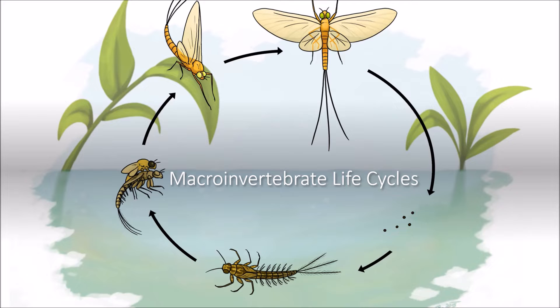One aquatic insect that's pictured on the screen you may be familiar with — this is the mayfly. The larva will spend anywhere from months, most likely years, in aquatic ecosystems, but are only adults on dry land for 24 to 72 hours. This leaves them just enough time to mate and lay eggs for future generations.